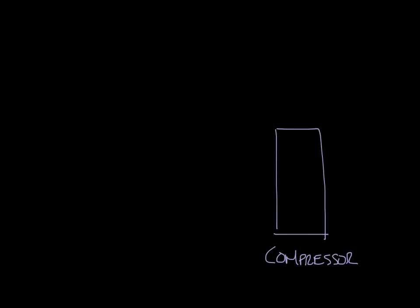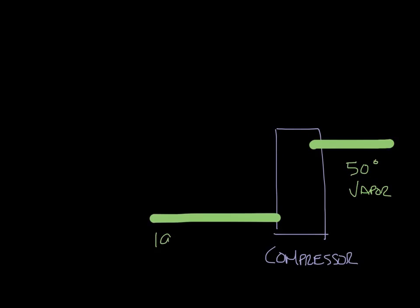We'll use the green lines to show the refrigerant in and out again. So in this case, we had 50 degree vapor coming in and what we have coming out would be about 195 degree high pressure vapor.